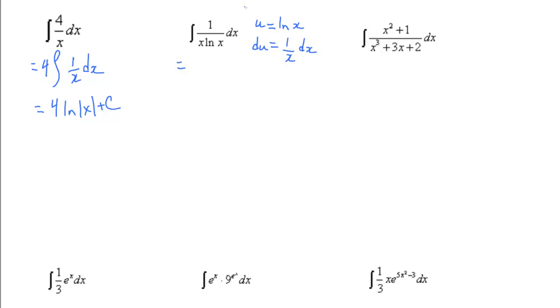This part is our du. Here's u, and that gives us the integral of du over u, which we should know is ln of u plus a constant. Our question didn't have u, it had x, so we replace u with ln of x plus c.